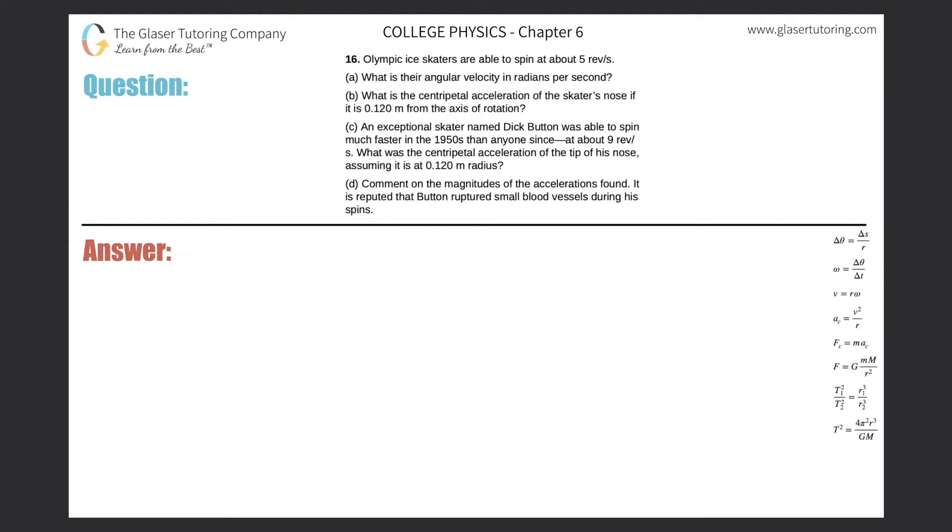Number 16, Olympic ice skaters are able to spin about five revolutions per second. What is their angular velocity in radians per second? Alright, so let's first take a look at letter A here. So it's a very straightforward conversion.